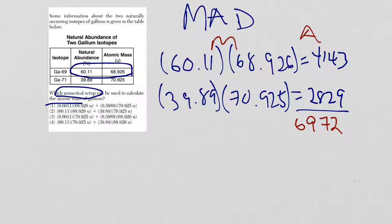And then, the last step is the D, which is divide. And you're going to take your 6972, and you're going to divide by 100, and you're going to get an answer of 69.72.